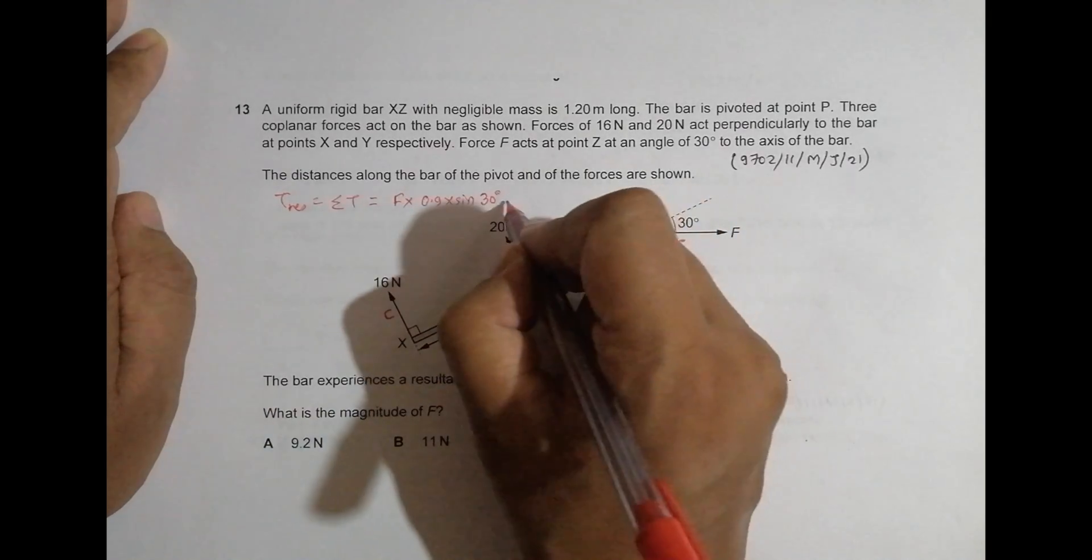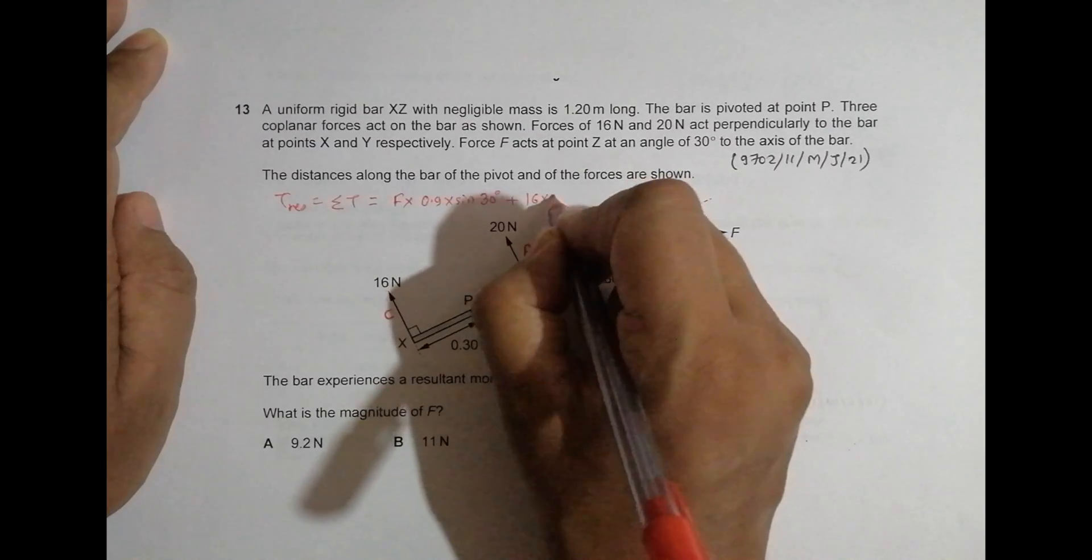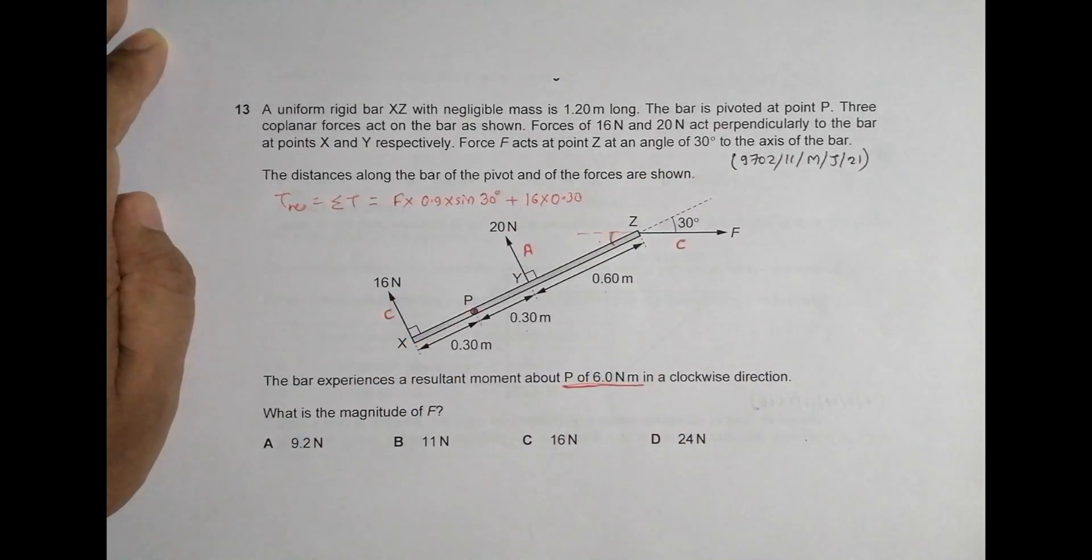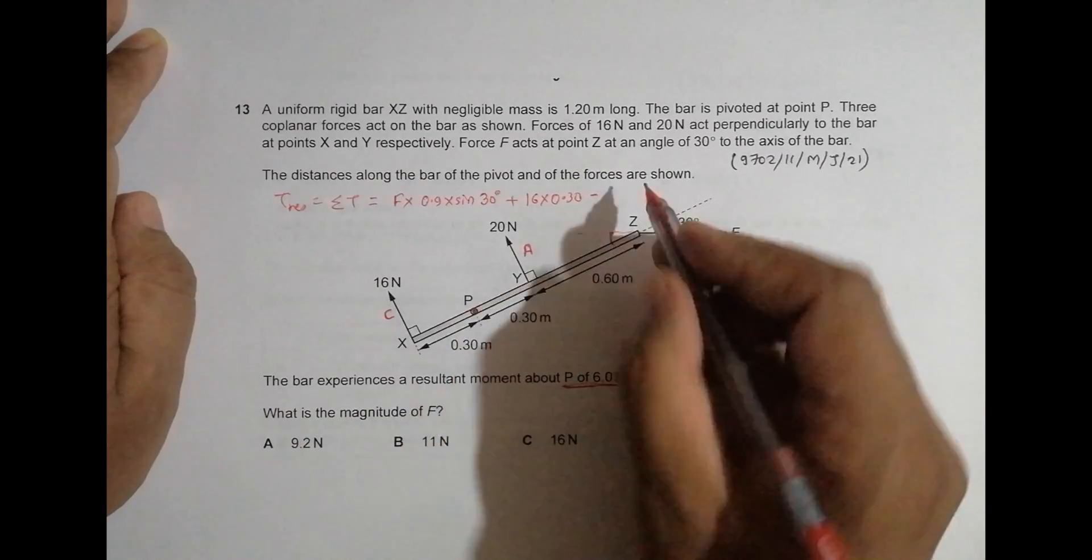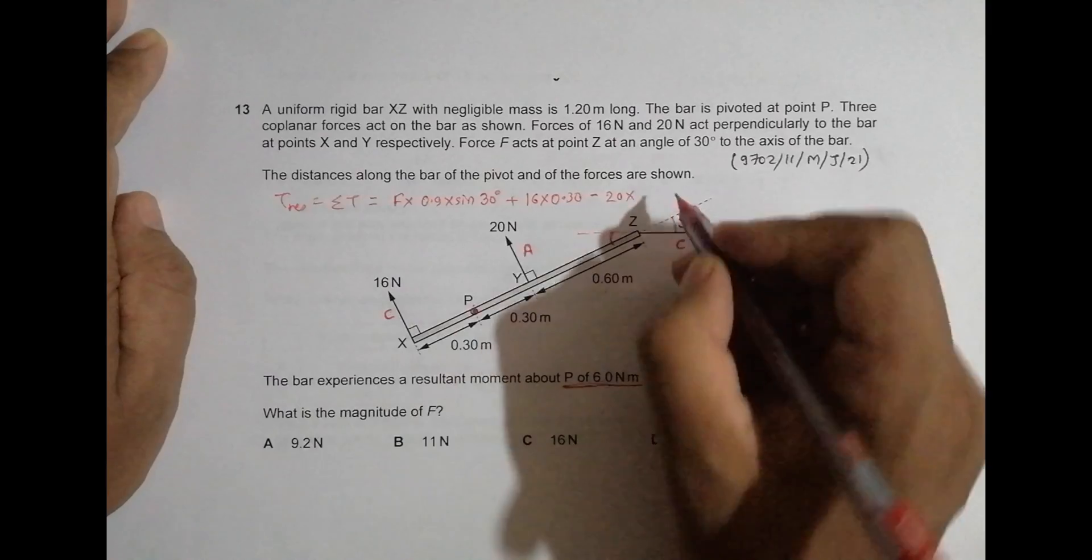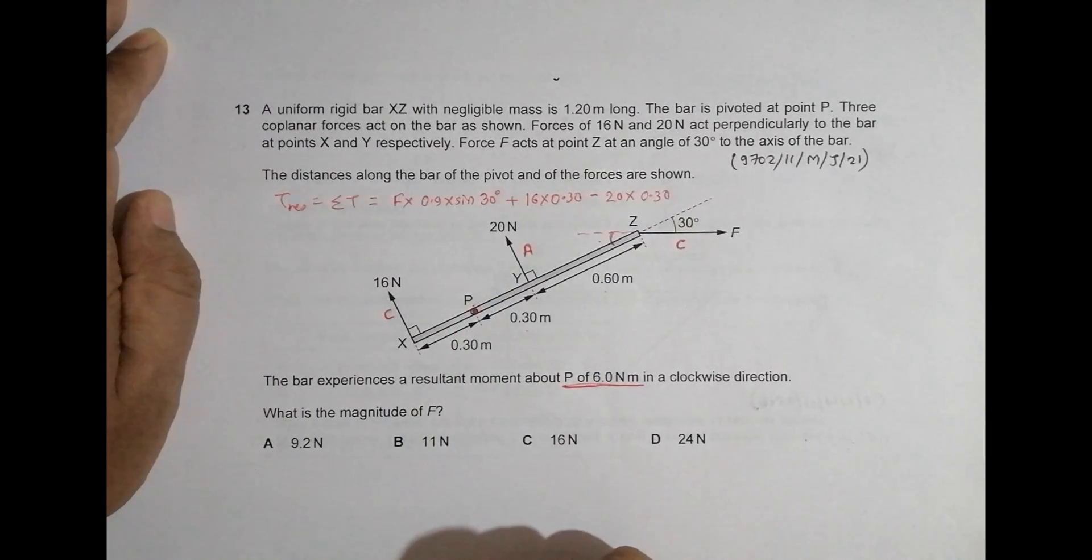So one clockwise and another clockwise is plus, plus this one, so it is 16 into 0.30. This is perpendicular, it is sine 90, that's why it is simply 1, so it is force into this r. And minus, this is anti-clockwise, so minus it should be equal to 20 into this distance r which is 0.30.